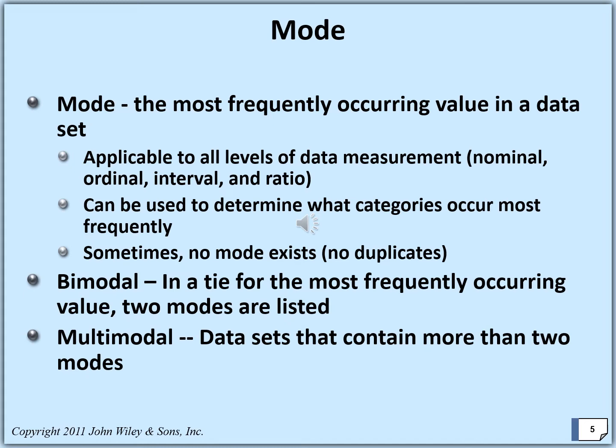Let us start at the beginning with the mode. The mode is the most frequently occurring value or characteristic among individuals, or the value or characteristic that appears more than other values in the same population or sample. By definition, mode is applicable for all levels of data measurement: nominal, ordinal, interval, and ratio. It can also be used to determine what category occurs most frequently.